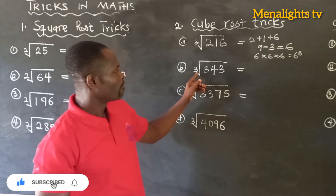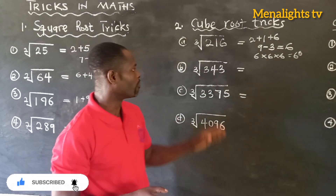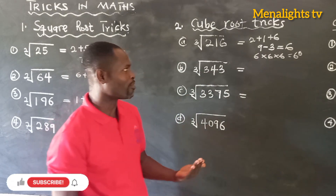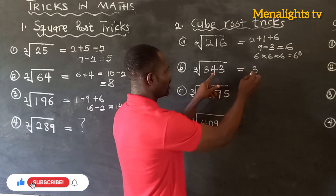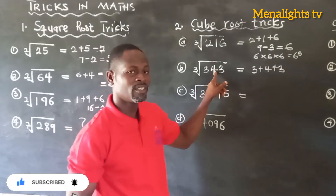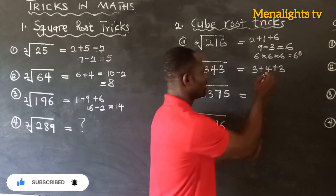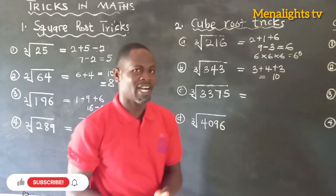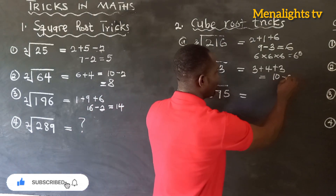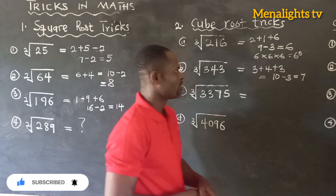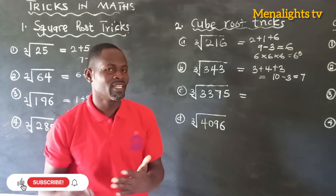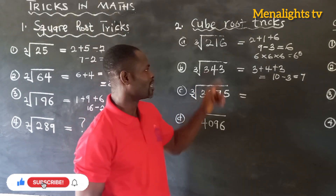Now find the cube root of 343. We do 3 plus 4 plus 3, which gives us 10. We then deduct 3 from it — 10 minus 3 gives us 7. So the cube root of 343 is equal to 7, meaning 7 times 7 times 7 gives us 343.